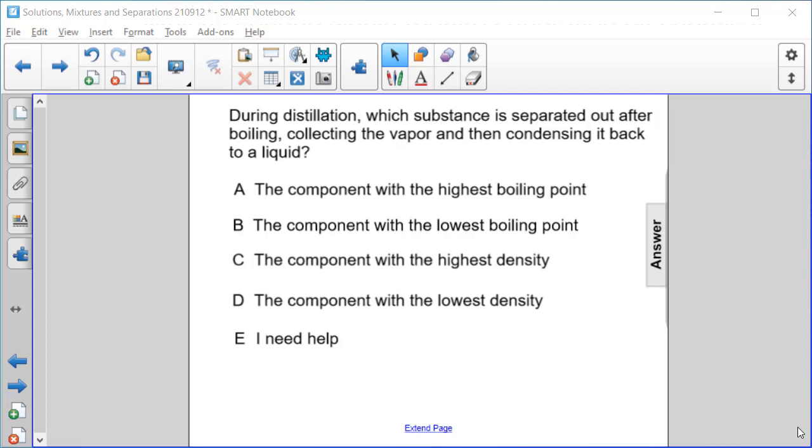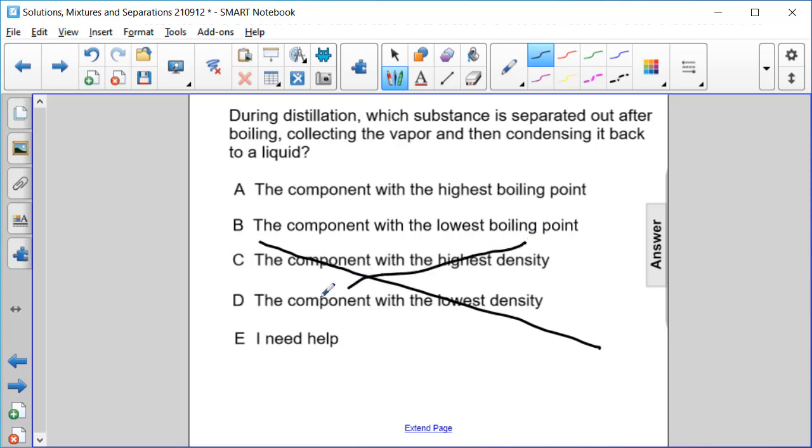the highest density, or D: The component with the lowest density. So first of all, we have to think about how distillation separates mixtures. Distillation separates mixtures based on their boiling points, not their densities.